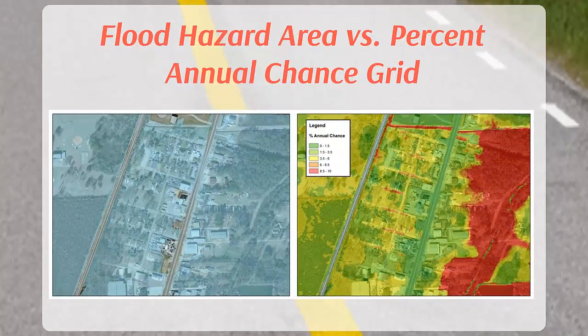The next grid we will examine is the percent annual chance grid. This raster dataset represents the percent annual chance of flooding for locations along the flooding source within the 0.2% annual chance floodplain. In lieu of the traditional in or out philosophy of floodplain management, this grid helps officials and residents understand the relative probability of being flooded.